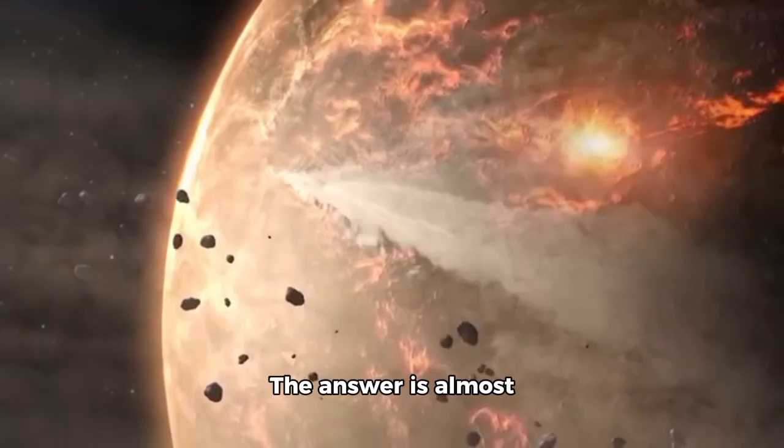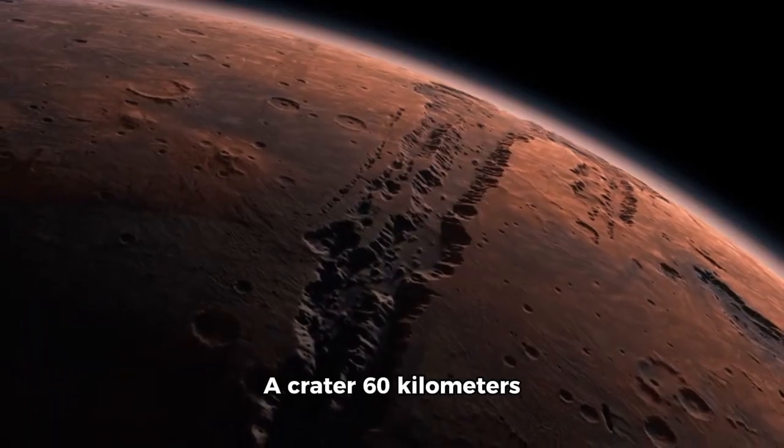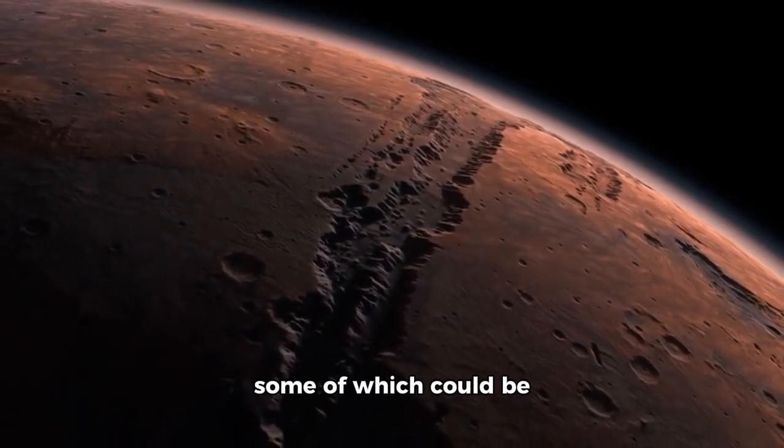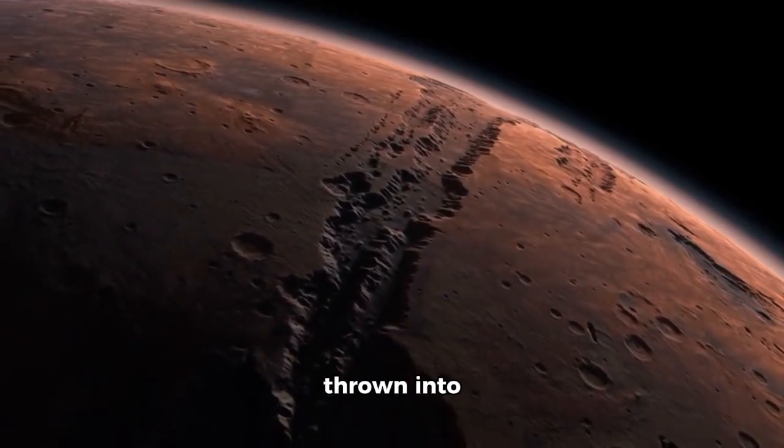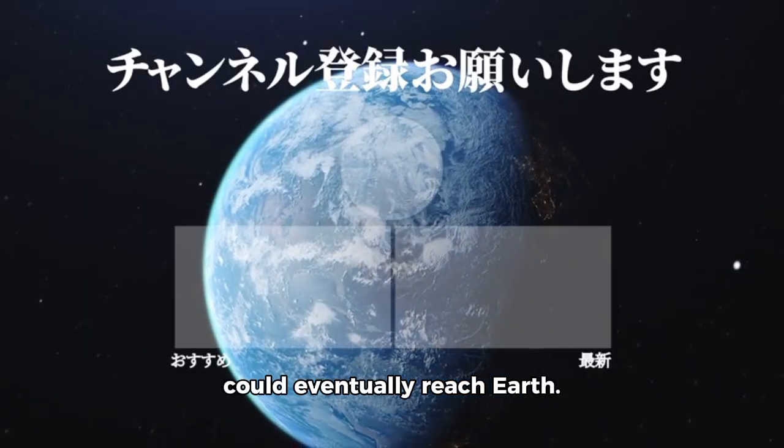What happens if it hits? The answer is almost incomprehensible. With a mass estimated at 10 billion tons and a speed of 57 kilometers per second, an impact relative to Mars would unleash more than 2 million megatons of energy, thousands of times the most massive nuclear explosion in Earth's history. A crater 60 kilometers wide and 5 kilometers deep would scatter debris across Mars' orbit, some of which could eventually reach Earth.